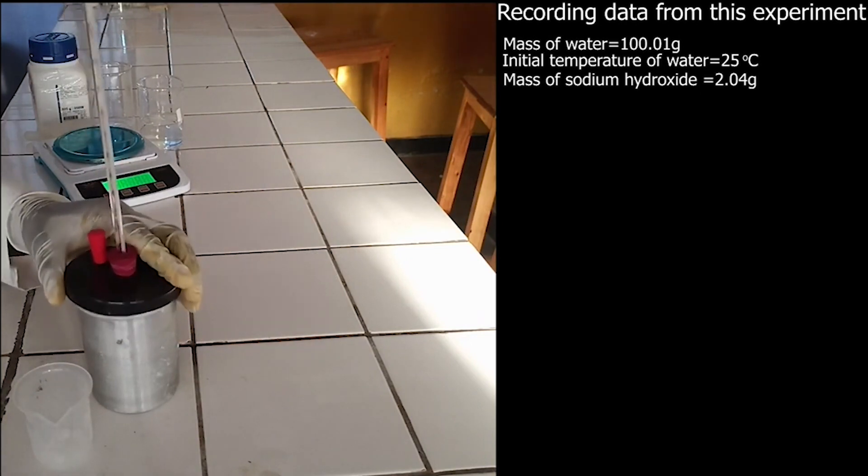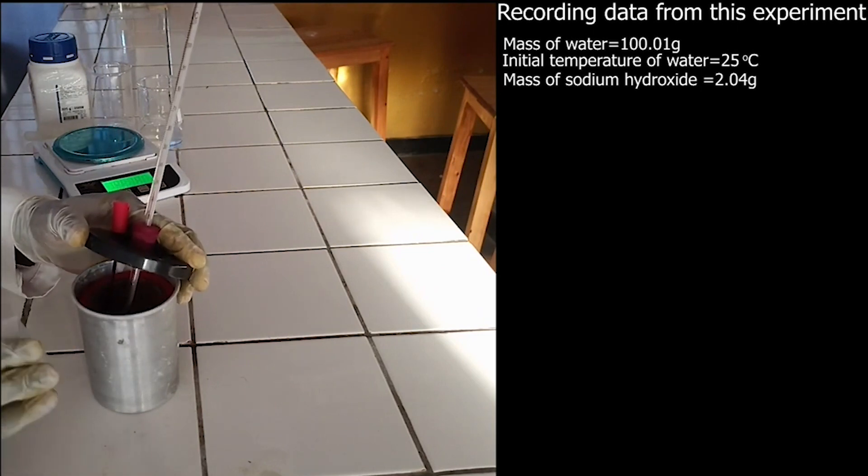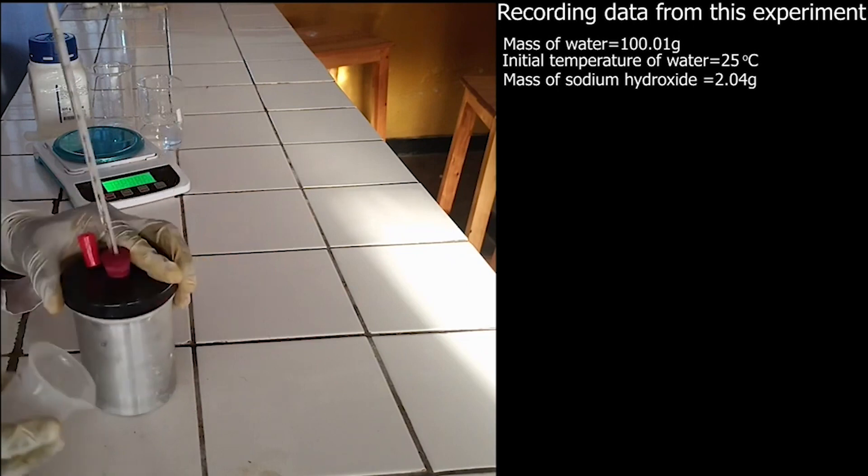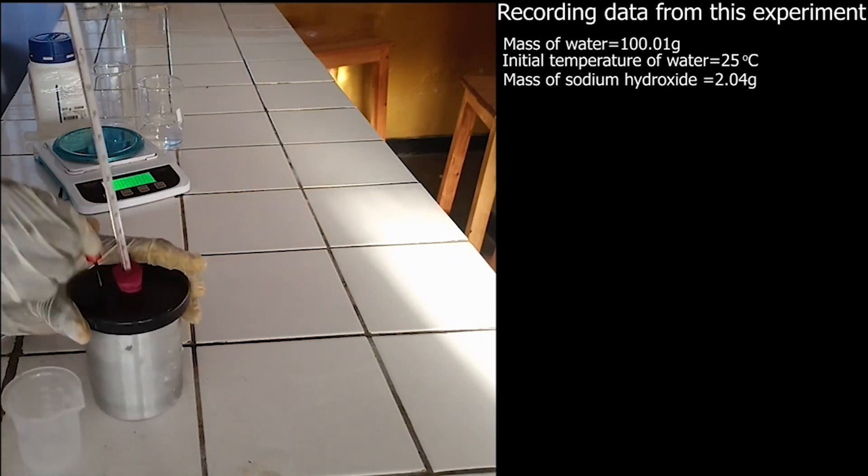After measuring sodium hydroxide, quickly pour sodium hydroxide in cup calorimeter and close the cup calorimeter immediately so that no heat will be lost.